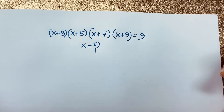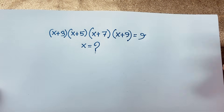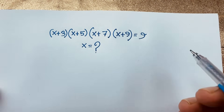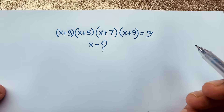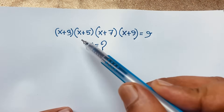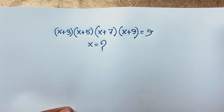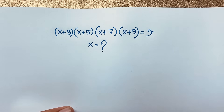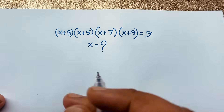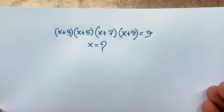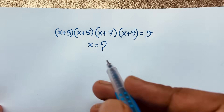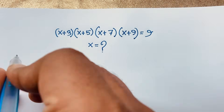Hello everyone, welcome to Russell's classroom. Today we are solving a nice algebra problem. The question is: (x+3)(x+5)(x+7)(x+9) = 9. Find x. Let's see how to solve this interesting math problem.